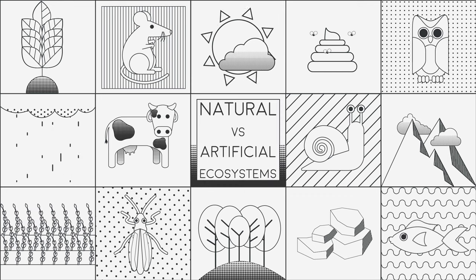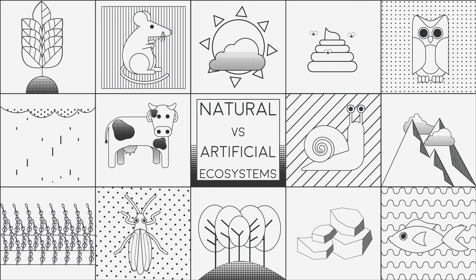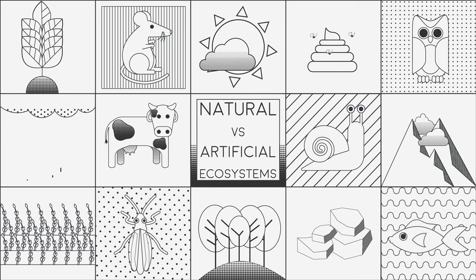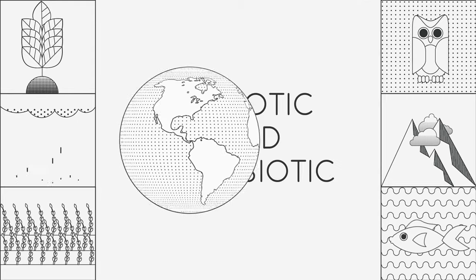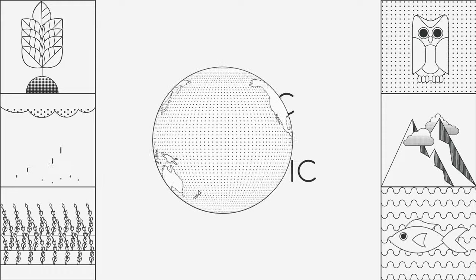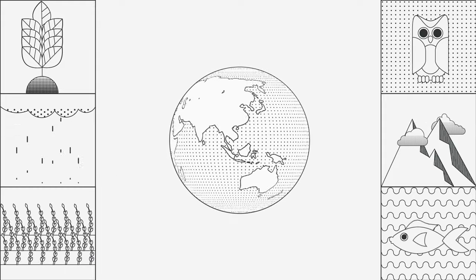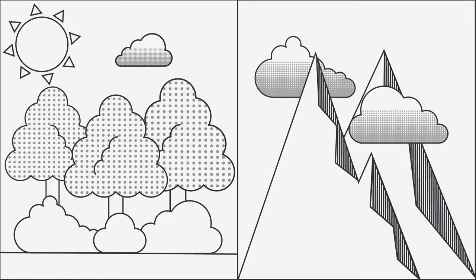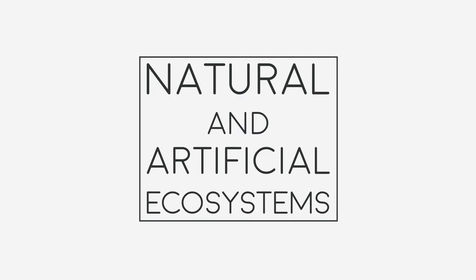Natural vs. Artificial Ecosystems. An ecosystem can be defined as a large, highly interconnected area of the planet that is composed of several different biotic and abiotic components. A good example of an ecosystem would be an entire forest or a mountain range. In this video, we will look at the difference between natural and artificial ecosystems.